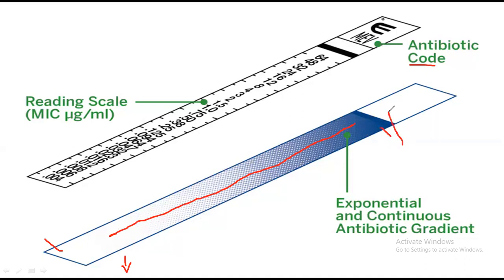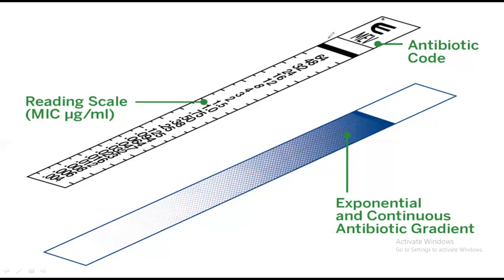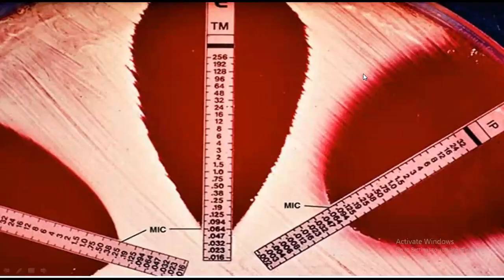Here is the reading scale. For example, at this point the concentration is 0.75 micrograms per milliliter, and here it is 12 micrograms per milliliter. The antibiotic chemical is immobilized over the surface of the strip. After that, you will take a forcep and place the strip over the petri plate onto your inoculum. Then wait for 24 hours overnight and you will get your results.